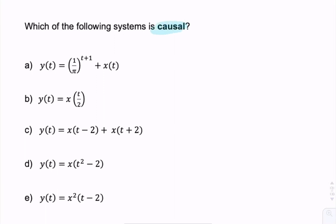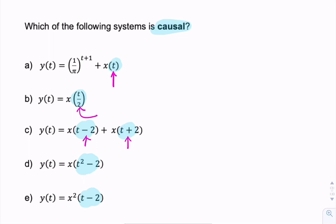Which of the following systems is causal? In questions relating to causality, we're always interested in the bit between the brackets. We want to know whether or not the output is anticipating a future value of the input, so we're interested in knowing the time when the input value is needed. We're not interested in the value or the power — we're interested only in the argument for x, to know what instant of time the input is needed in order to calculate this output.